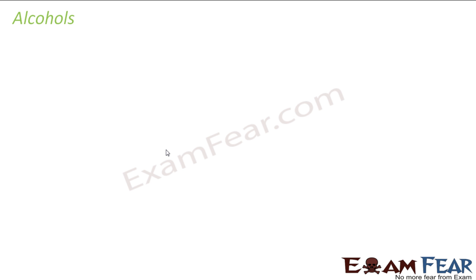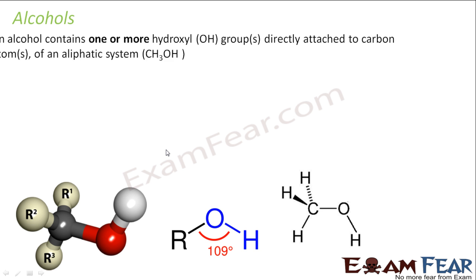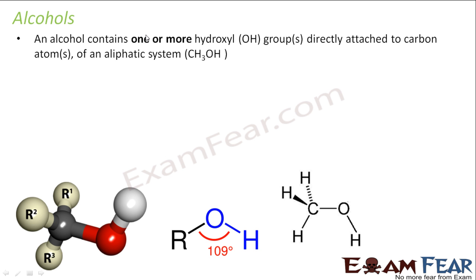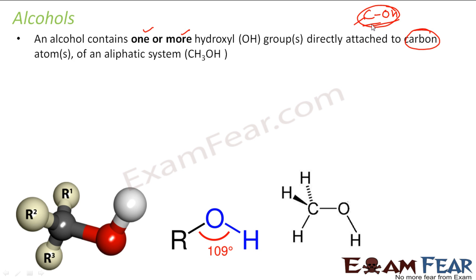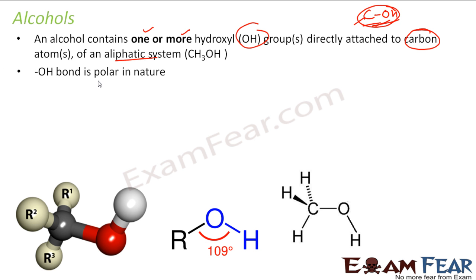Now let's start with alcohols. Alcohols have one or more OH groups that are directly attached to a carbon atom — please note the OH group is always attached to carbon. This must be in an aliphatic system; if it is aromatic, then it is phenol. The O–H bond is polar in nature because oxygen is more electronegative than carbon.